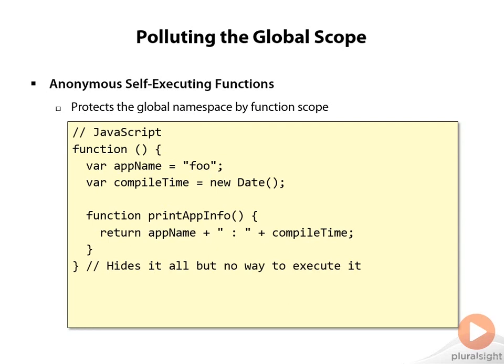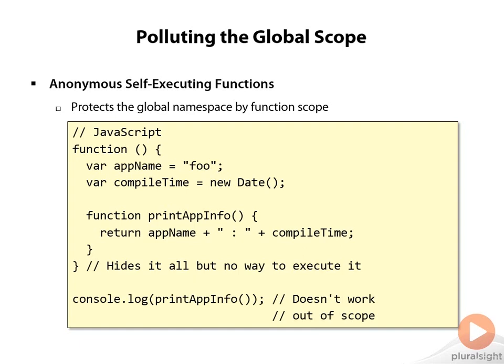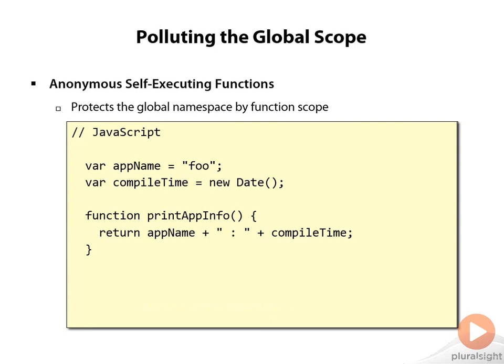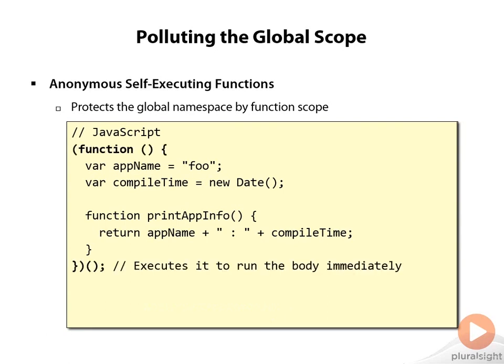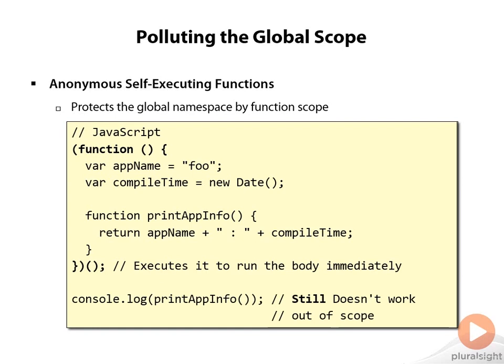But that's not really good enough. We can't call print app info because it was defined inside the function and isn't visible outside of that scope. If we add an anonymous self-executing function, this creates a function — anonymous because it doesn't have a name — and executes it immediately by adding the parentheses at the bottom. So this code, as the script is being read in, will immediately be run and define the variables and function. But it still doesn't work because we can't get at print app info — it's still inside a function.